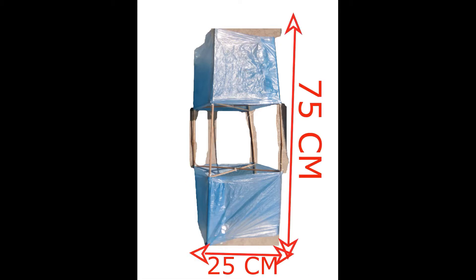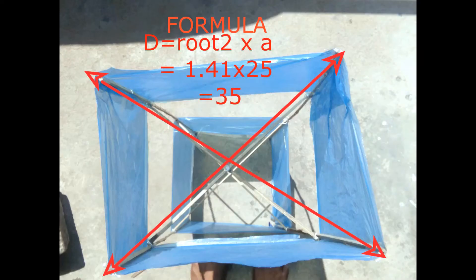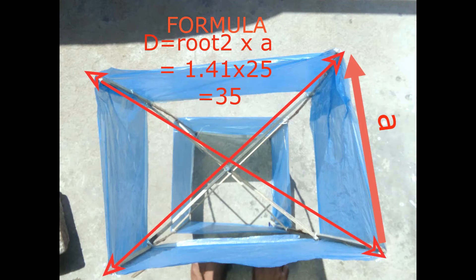Now we can choose the height of the box kite. I chose the height of my kite as 75 cm, but you can choose whatever size you want. To find the diagonal of the kite, divide the height into 3 and multiply that value by root 2. In my case, the diagonal value is 35 cm.